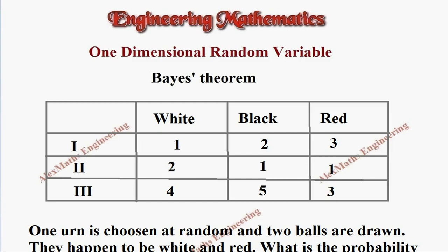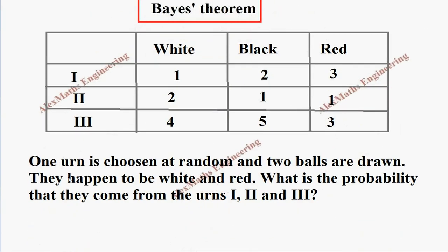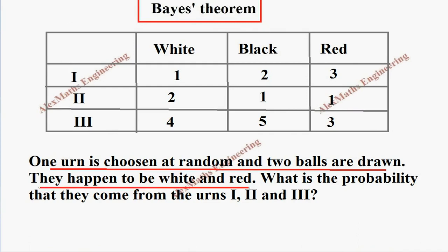Hi students, this is Alex. In this video we are going to solve a problem from Bayes theorem. They have given three urns 1, 2, and 3, and the number of white, black, and red colored balls present in each urn is listed. One urn is chosen at random and two balls are drawn, which happen to be one white and one red.